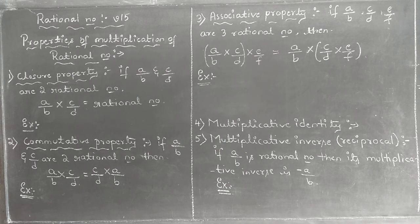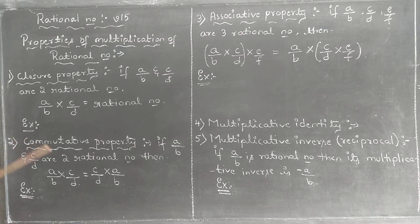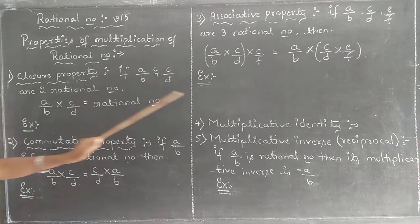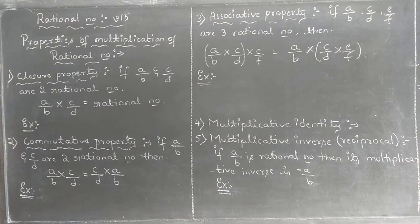I think you can recall the properties. What are the properties? Closure property, commutative property, associative property. This is what we have studied till now, and there are more new things remaining.